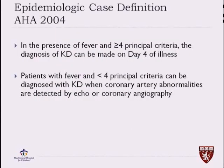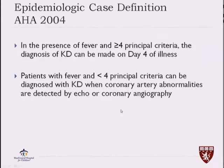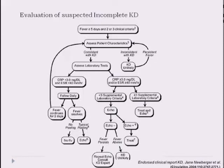We can make the diagnosis of Kawasaki disease if we have fever and more than four principal criteria on day four of the illness — we don't have to wait for day five. And if we do have coronary artery abnormalities, we can make the diagnosis even if we have less than four principal criteria. If we suspect Kawasaki disease but it's incomplete, we rely on ancillary testing and the echocardiogram to help make the diagnosis, and we keep checking. This endorsed clinical report published in Circulation in 2004 is helpful in making the diagnosis.